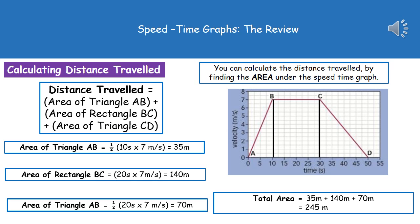Once we've got those three areas, all we need to do is add them together. So 35 plus 140 plus 70 gives us our total area or the total distance that we've traveled of 245 meters.